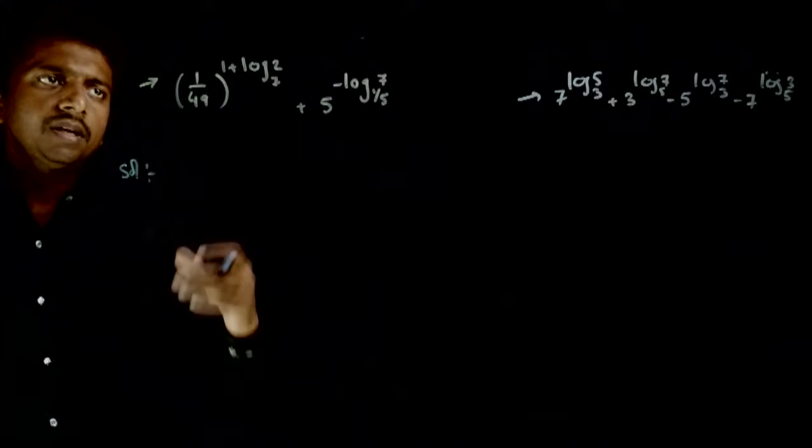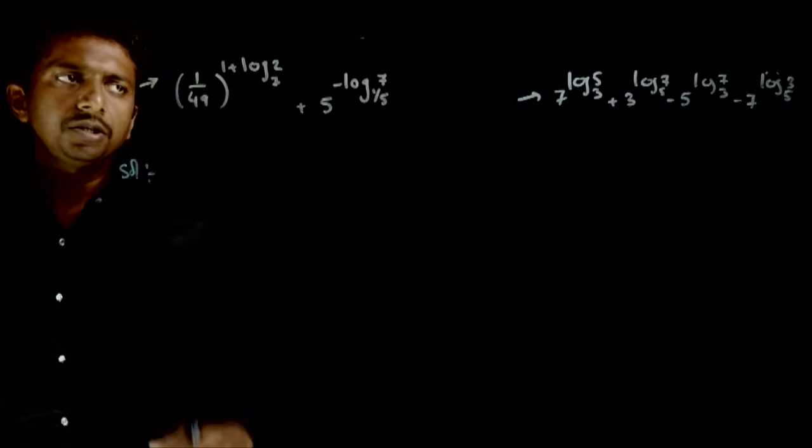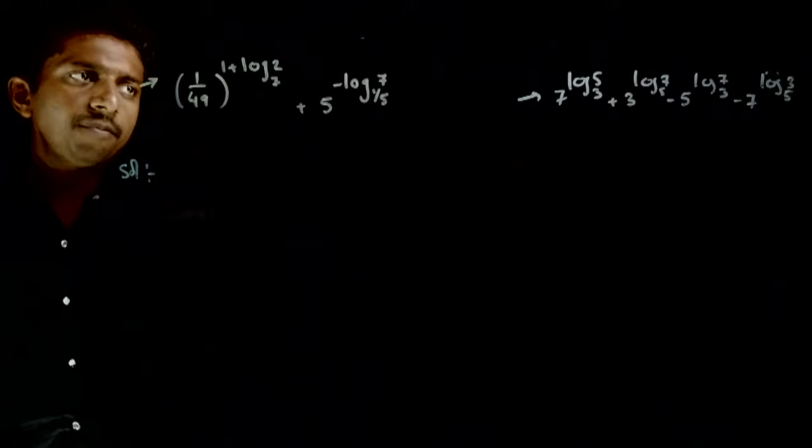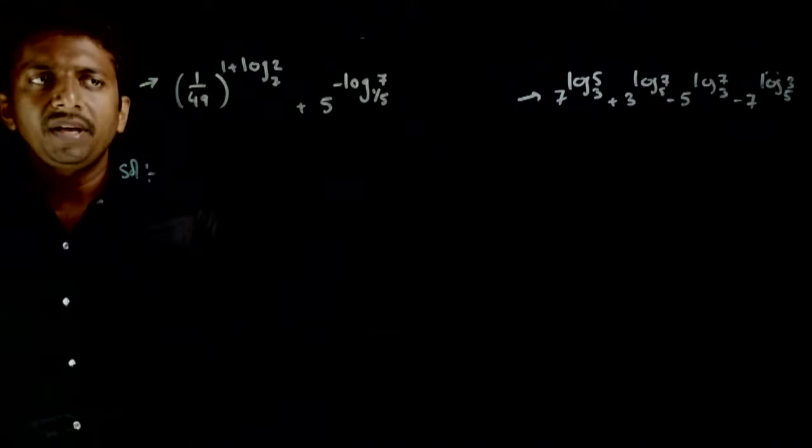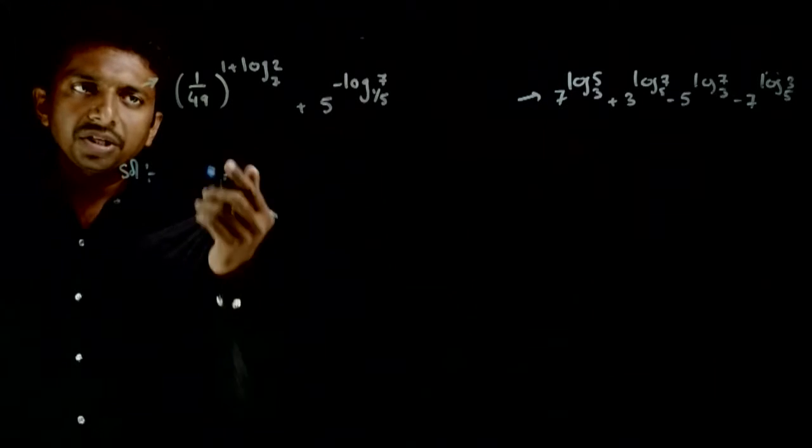So welcome students. This question go solve karen hai. So 1 by 49 power 1 plus log 2 to the base 7 plus 5 power minus log 7 to the base 1 by 5. Iska value poochh hai. So baat basic question hai.